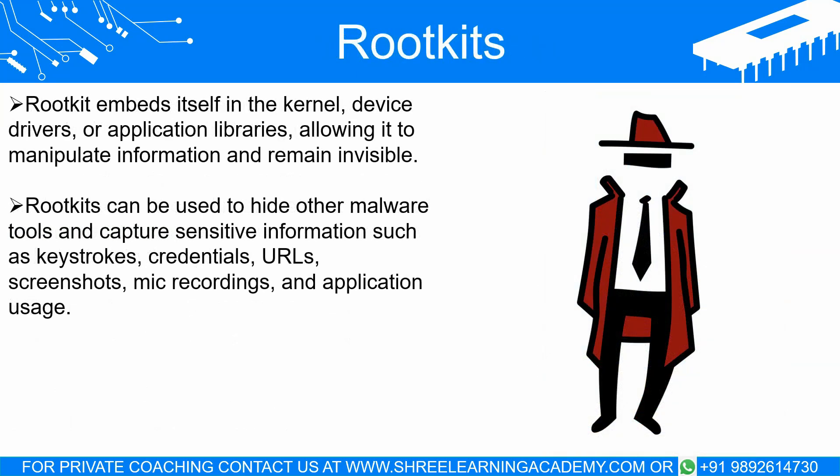Rootkit is a special type of malware that embeds itself very deep in the operating system. Rootkit positions itself in the heart of the operating system and can manipulate all the information that the operating system sees. Mostly, rootkit replaces the kernel of the OS and inserts itself under the kernel, replaces the device drivers, or penetrates inside the application libraries so that whatever information it feeds or hides, the operating system thinks it is normal and allowable. Because of this, rootkit can hide itself from detection, block file management tools from reading its files, and block task or process management tools from seeing its processes.